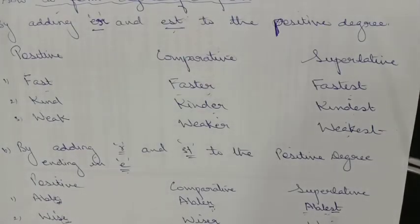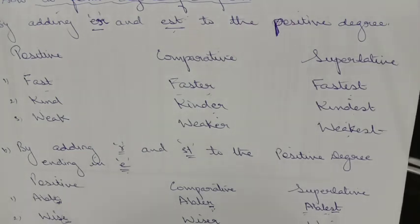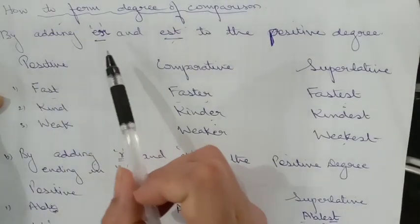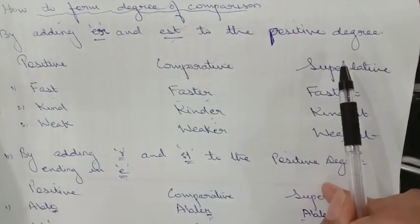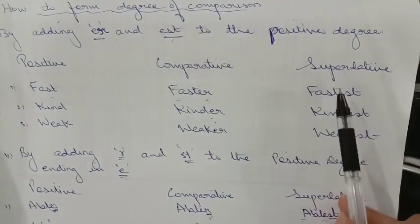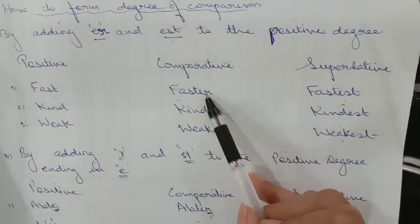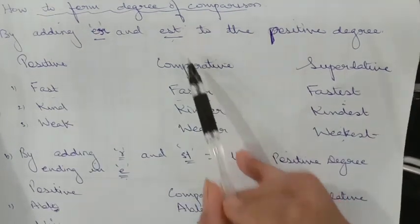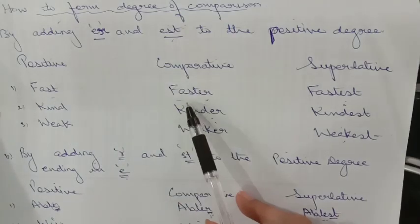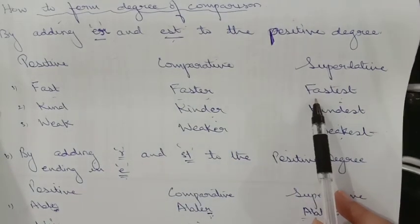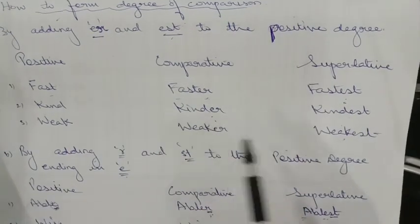Let's take a quick review of how to form degrees of comparison. Rule one: by adding E-R or E-S-T to the positive degree. Suppose the word is 'fast' — add E-R for the comparative to get 'faster', and E-S-T for the superlative to get 'fastest'. Similarly: 'kind', 'kinder', 'kindest'.